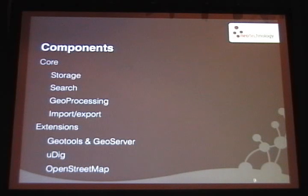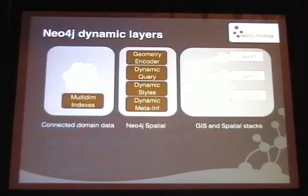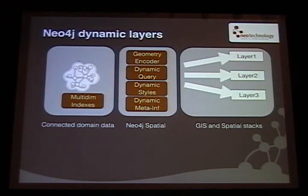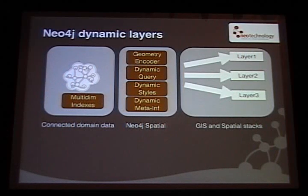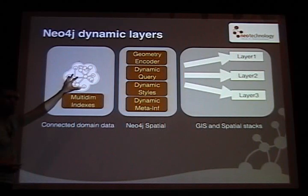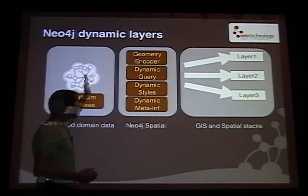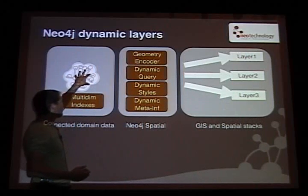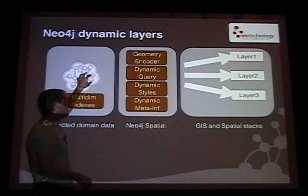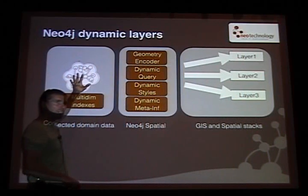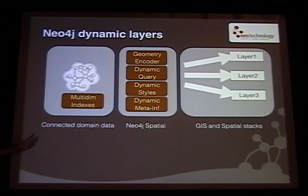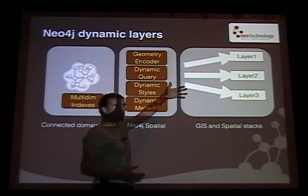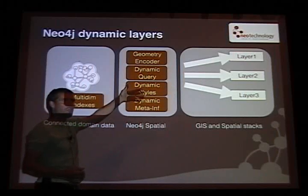How does that work? We have the raw graph. What we do is add indexing structures to the domain info you might have. Then we enhance, on the fly, views on this graph — traversing through the graph and adding things that normally aren't in the dataset. For instance, how do I get from a traversal to a structure understandable by a GIS: a polygon, a line string, or whatever?